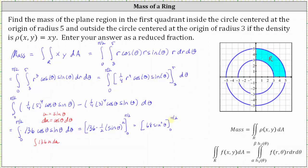Now we need to find F of pi over two minus F of zero, which is equal to 68 times sine squared of pi over two minus 68 times sine squared of zero. Sine of pi over two is one, so one squared is one, and 68 times one is 68. Sine of zero is zero, so sine squared of zero is zero. The final result is a mass of 68.